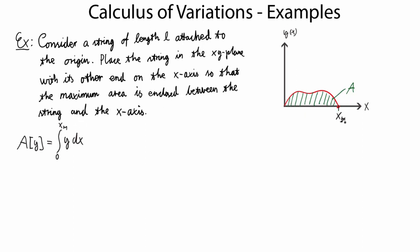Here we know the starting point, but x_m is unknown — it depends on the solution. So we can't just apply the Euler-Lagrange equation to this problem. What we have to do is change variables so that we go from a known starting point to a known ending point. The clue is in the fixed length L of the string.